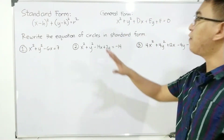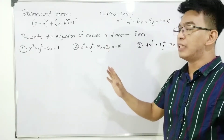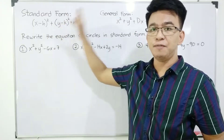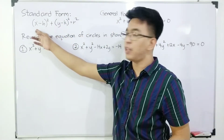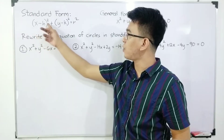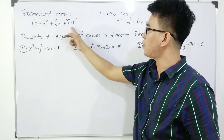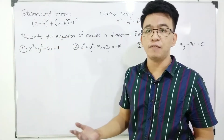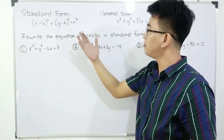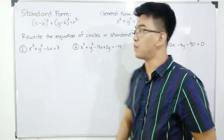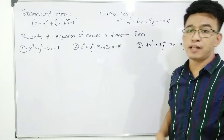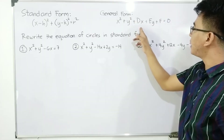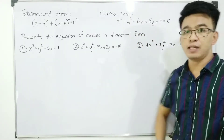We have here the different forms when it comes to the equation of the circle in the conic section. As for the standard form, we have the quantity of x minus h squared plus y minus k squared is equal to r squared, wherein h and k are the coordinates of your center, while the variable r is equal to your radius. This one is the general form: x squared plus y squared plus dx plus ey plus f is equal to zero.